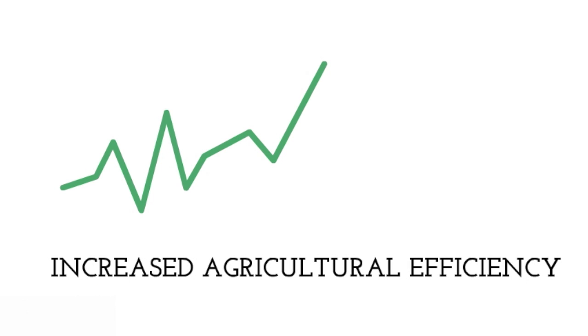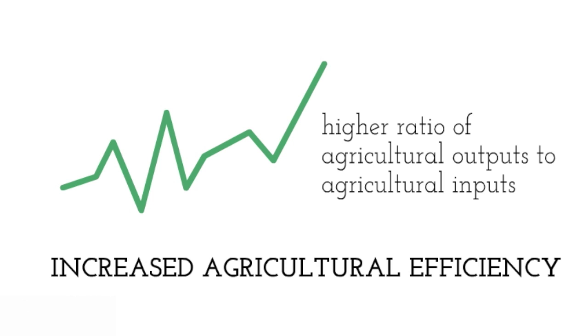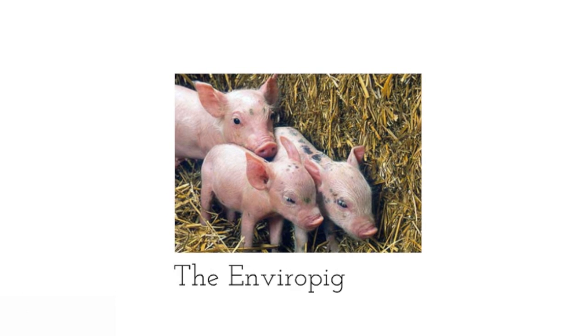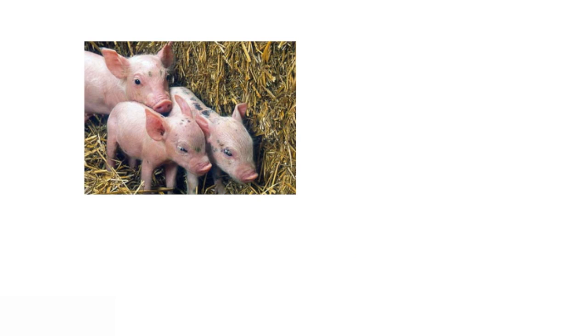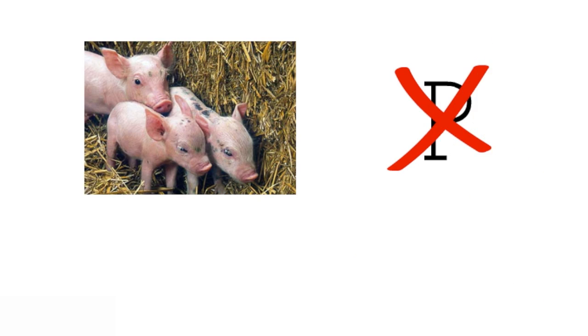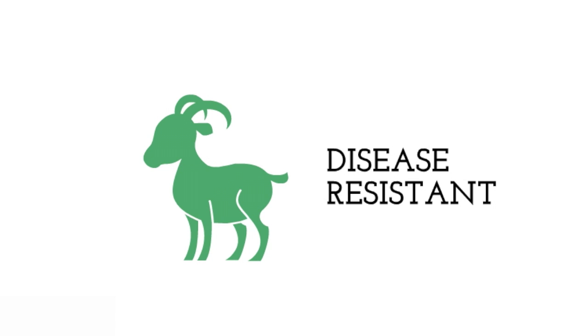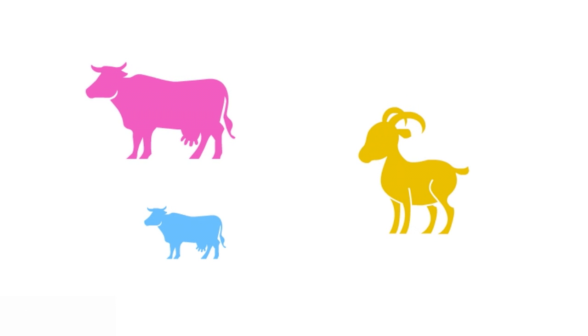Another argument for transgenesis is increased agricultural efficiency — a higher ratio of agricultural outputs to inputs — which can also help reduce agricultural pollution. For example, the enviropig has been genetically modified to produce an enzyme that breaks down dietary phosphorus, limiting the amount of phosphorus released in its waste. Animals may also be genetically modified to be disease resistant, with examples including immunity conferred to offspring via antibody expression in the mother's milk, and parasite control in sheep and goats.